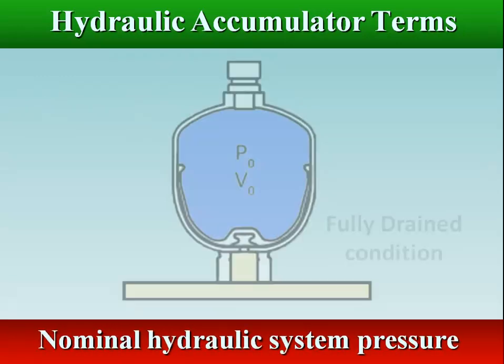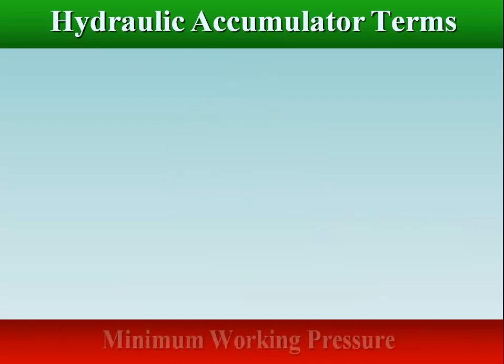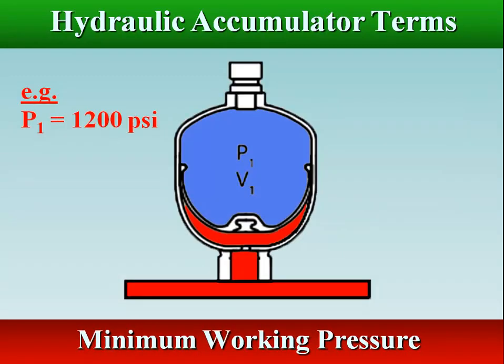Nominal hydraulic system pressure is the hydraulic pressure in the system, which will usually be the no-flow rating of the hydraulic pump. Minimum working pressure is the minimum pressure that the accumulator must maintain in the hydraulic system.